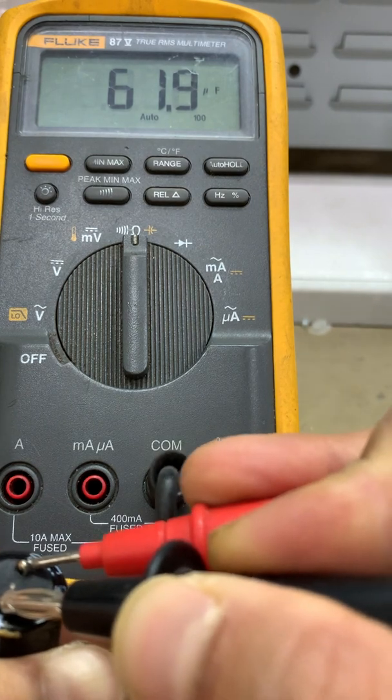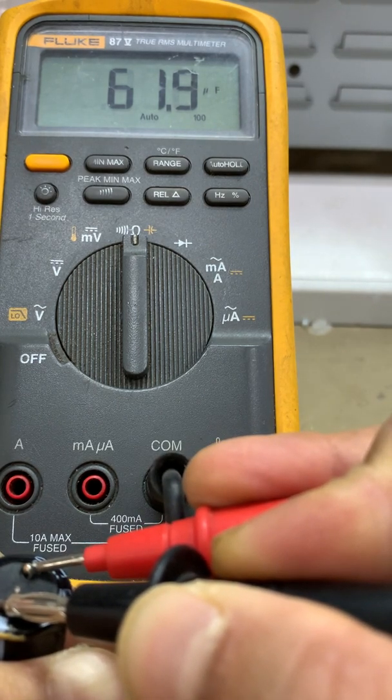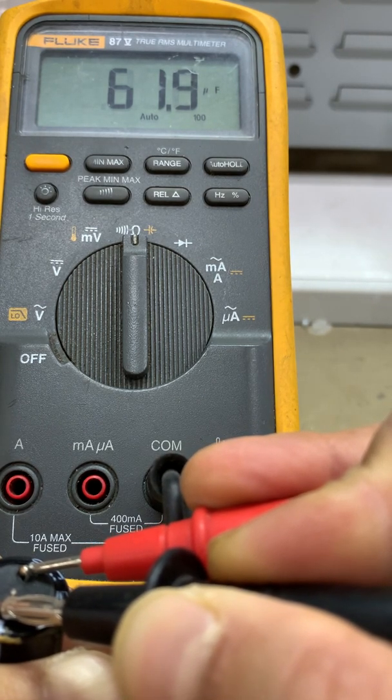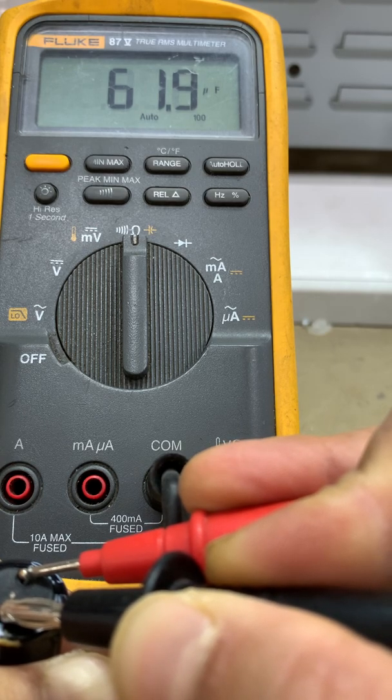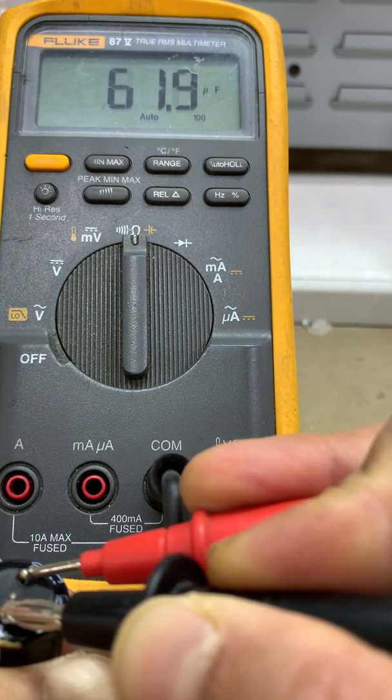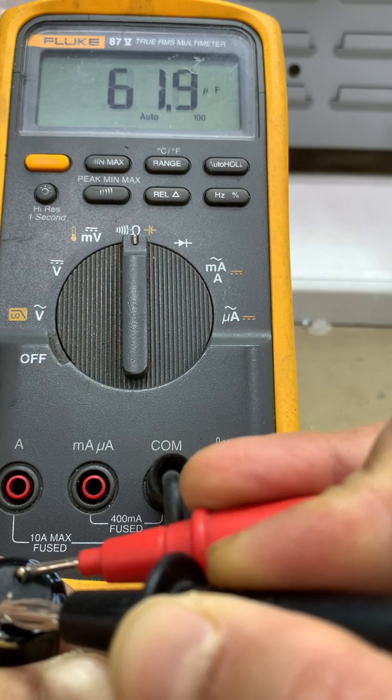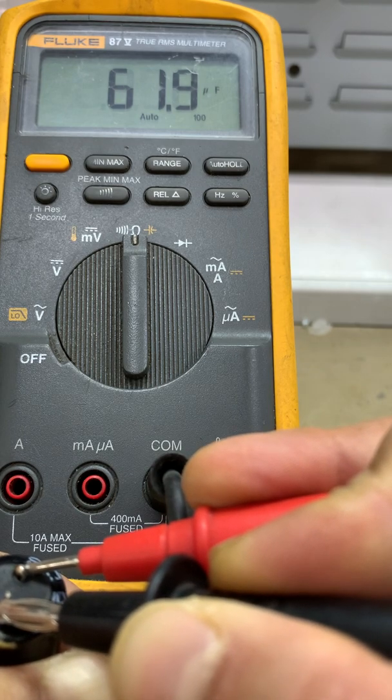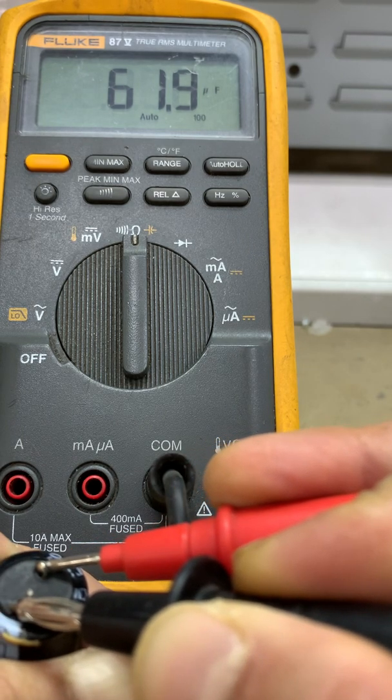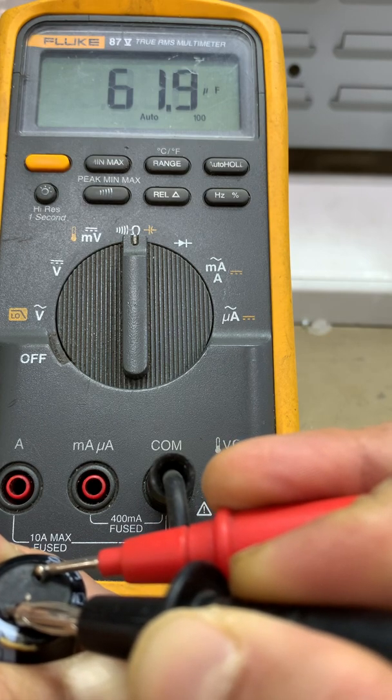As we can see, the value and reading is stable: 61.9, and the unit is microfarad. So this is the correct reading of the capacitor, 61.9 microfarad. It's steady, stable, and almost accurate.